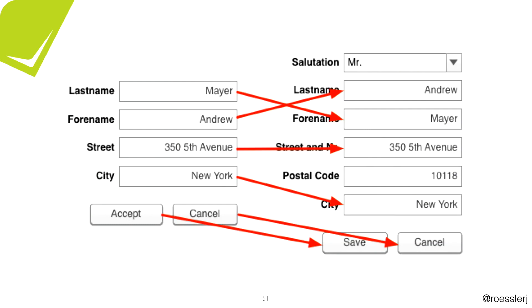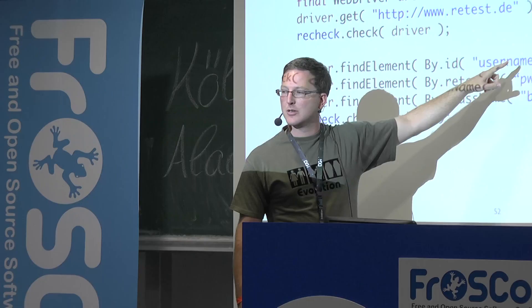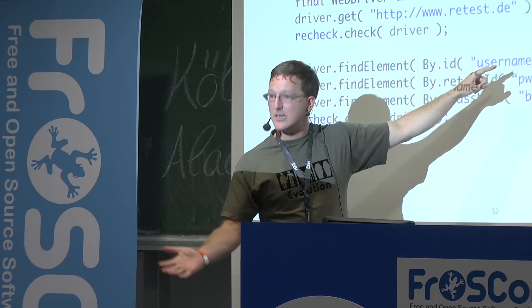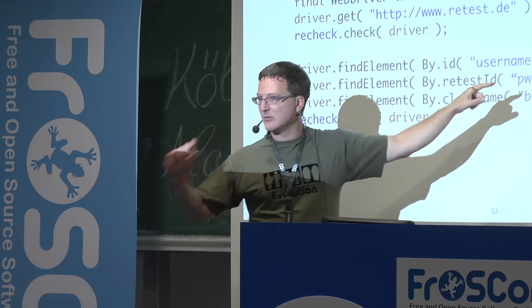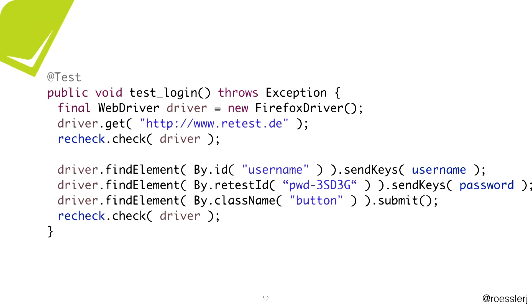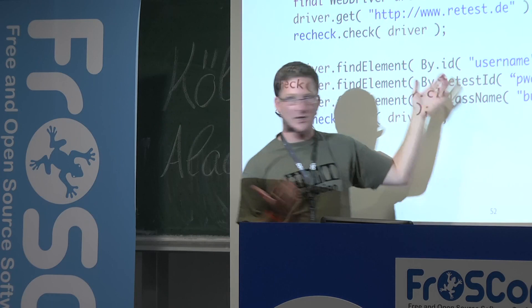With this full picture, you can look up in the golden master and tell the user: your ID changed — it used to be 'username,' now it's something else, please update the test. Or you can use a generated stable ID — a retest ID — that is not shown in the UI. If you reference that ID, your test is never going to fail because whatever changes, you have this stable induced ID that you can reference.